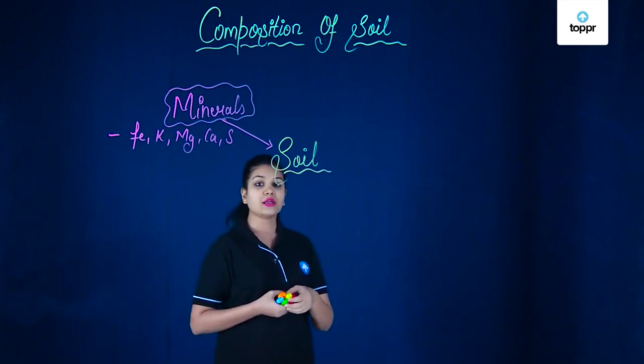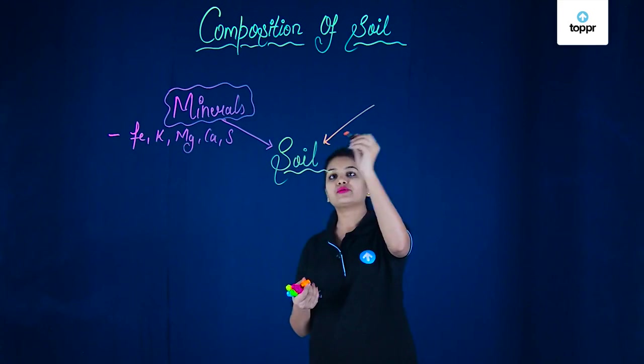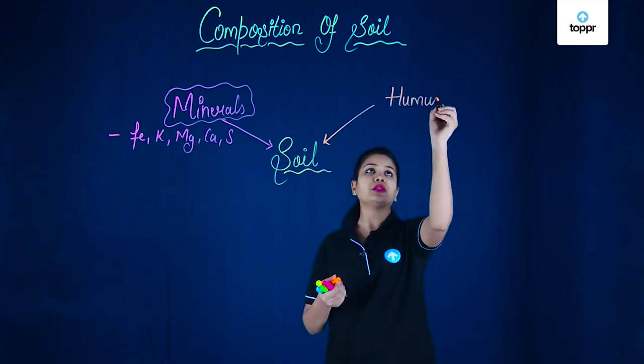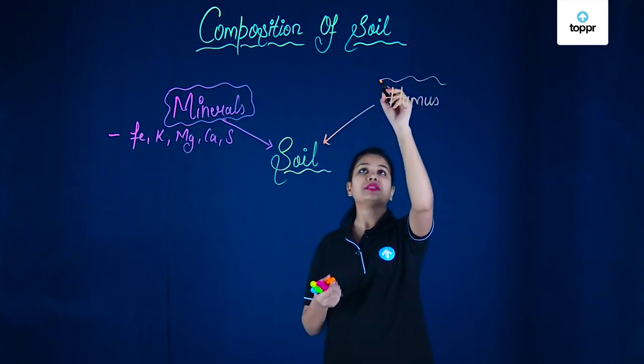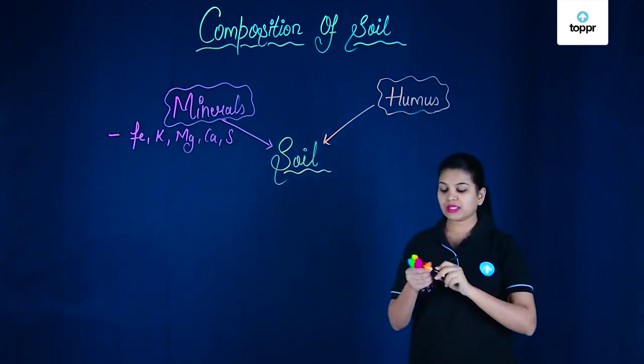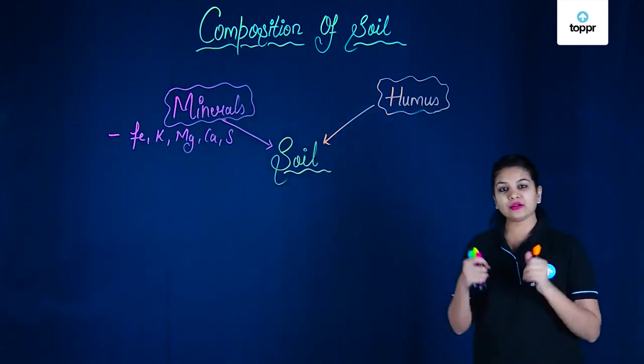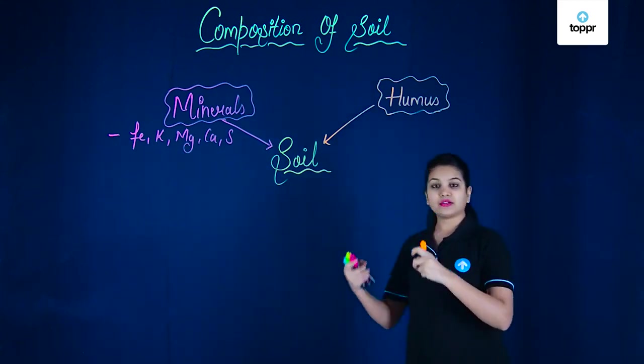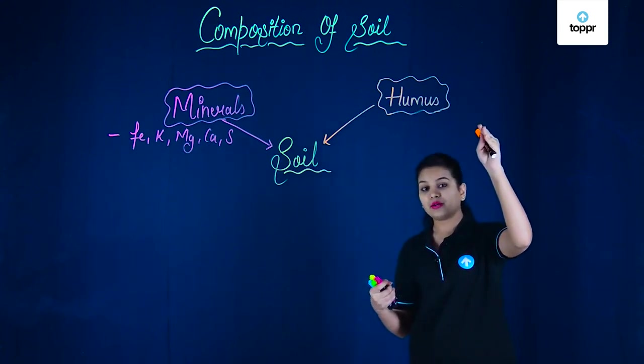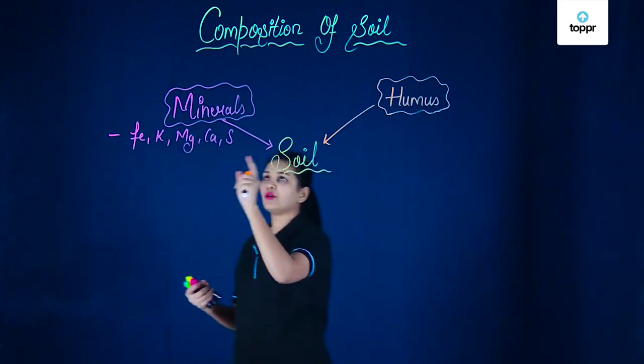Now next to these we will see the second very important thing which forms soil is the humus. Now what is humus? Here we see that it is formed due to the decomposition of dead and decomposing plants and animals. So when plants and animals they get decomposed, they get mixed up with these minerals and we see that this is what you call humus in here. The organic part of the soil is called humus and inorganic part mainly is formed by the minerals.